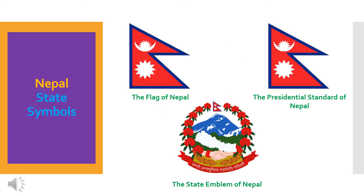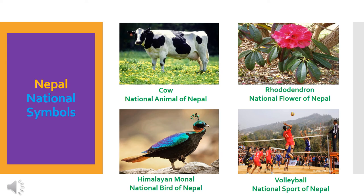Here are the three very important state symbols of Nepal. These are: the flag of Nepal, the flag of the President of Nepal, and the state emblem of Nepal. These are the national symbols of Nepal. Cow is the national animal of Nepal. Himalayan monal is the national bird of Nepal. Rhododendron is the national flower of Nepal. And volleyball is the national sport of Nepal.